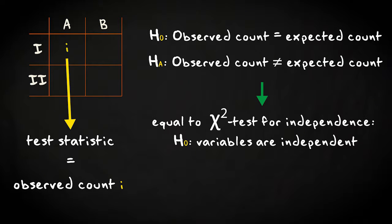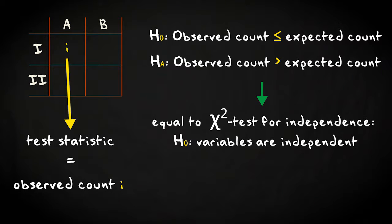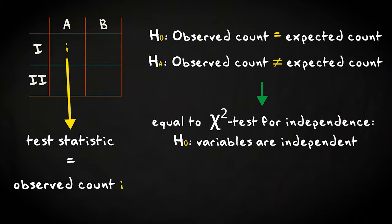You can in Fisher's Exact Test, however, also formulate one-sided hypotheses to test whether the observed count in a cell is higher or equal, and also that it's lower or equal than the expected value. But in general, you should have a very good reason to conduct a one-sided test and use a two-sided test as the default.